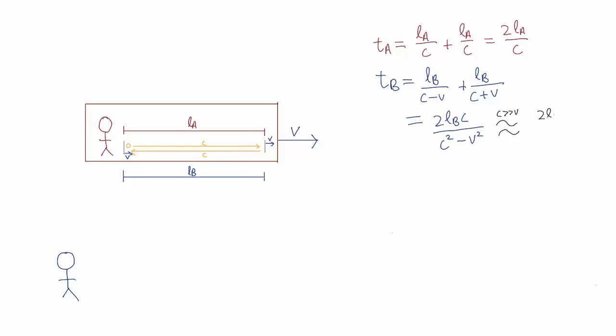Then the denominator, C squared minus V squared, would be pretty much just equal to C squared. And in this case, we get a result that looks similar to the result TA.